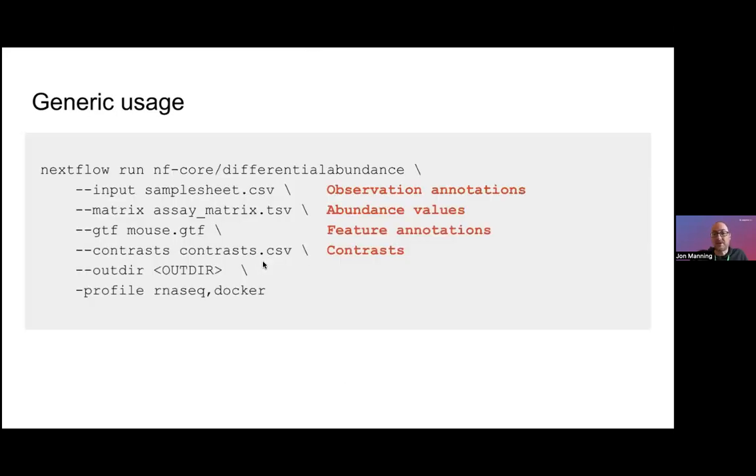The generic usage looks much like a lot of other nf-core workflows. We have an input sample sheet here, we have a matrix which is the abundance values and the GTF file (so the genome annotations), and then the contrast definitions that I mentioned before. Obviously we have a load of other parameters, but these are kind of the key inputs that you have, and then this will work in a minimal sense.